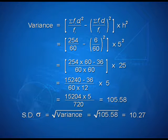Standard deviation can be calculated as positive square root of variance. That is equal to positive square root of 105.58.